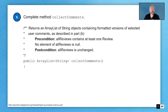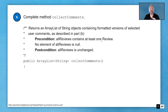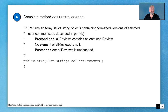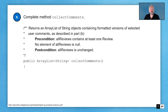So that's our task — that's what we're looking for with part B. The precondition is that allReviews contains at least one review. The post-condition is that allReviews is unchanged — we don't want to change anything in allReviews. So go ahead and pause, take some time — but be aware of your time, since we want to start practicing with the time frame we have — and see if you can come up with a good solution to the collectComments method.